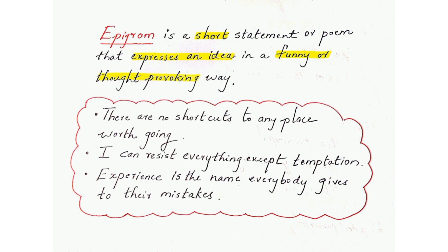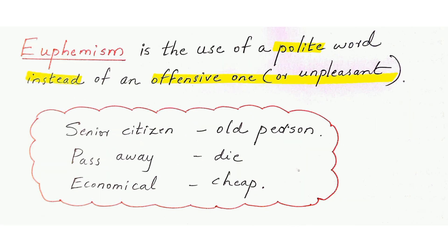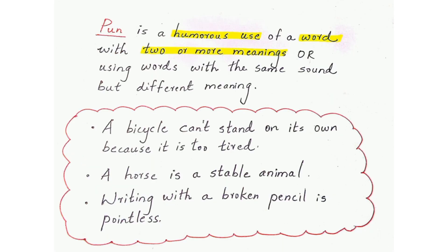Euphemism is the use of a polite word instead of an offensive or unpleasant word. For example, instead of saying someone died, a doctor might say 'this person has passed away' or 'is in a very critical condition.' Instead of calling someone old, we use the term 'senior citizen.' 'Pass away' means to die. 'Economical' instead of 'cheap' — the meaning is the same but it's more pleasant to say.